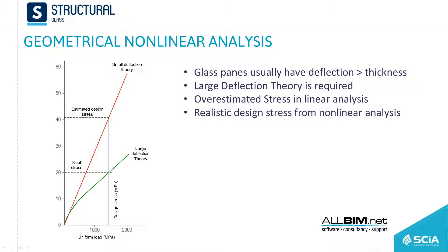If we go with linear analysis in situations where we have large deflections — which is typical in facades or big spans — we get higher stresses than in reality. We can get double the tension: 49 N/mm² instead of 20 N/mm². If we perform a large deflection analysis, we get larger deflections but the stresses are much closer to the real stresses.